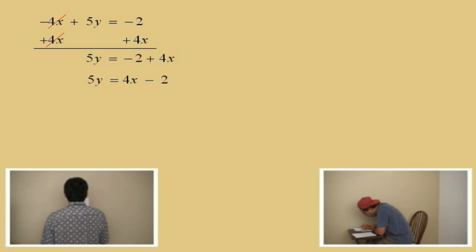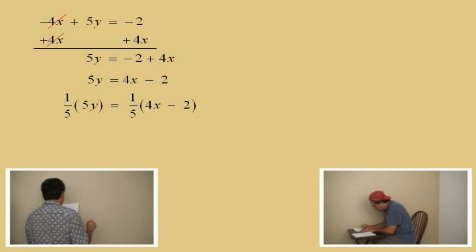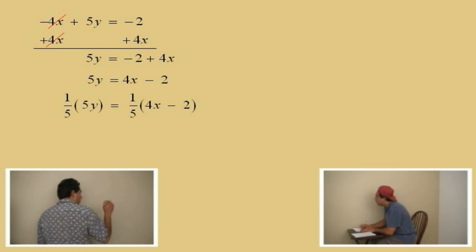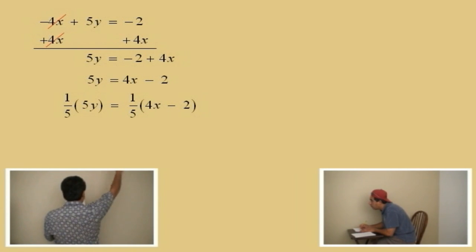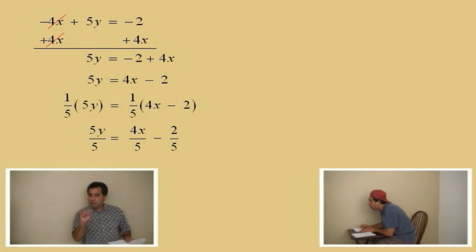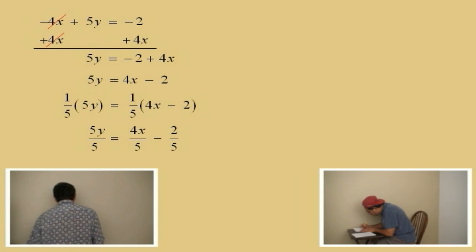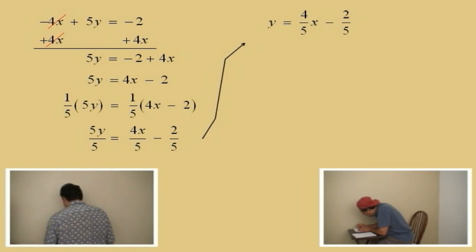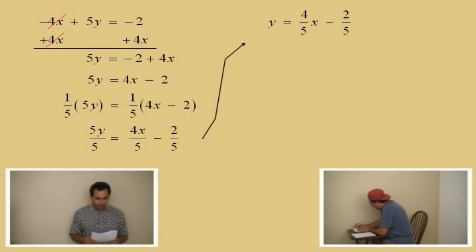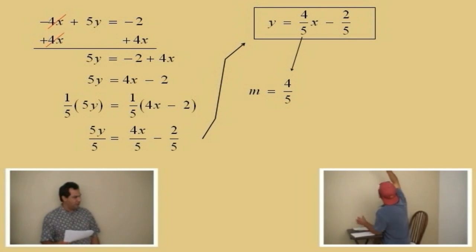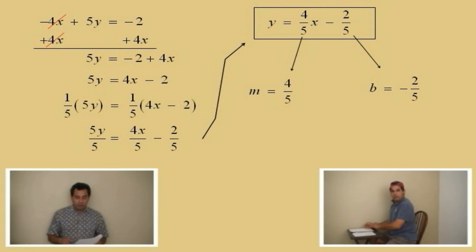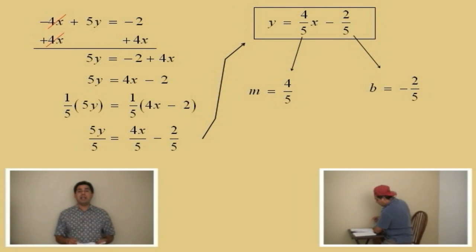Now we've got to solve for y. We're going to divide both sides by 5, which is the same as multiplying both sides by 1 fifth. When we distribute on the right-hand side, a 5 gets placed under each term. So Charlie, what does y equal? 4 fifths x minus 2 fifths. Y equals 4 fifths x minus 2 fifths. What is the slope, Charlie? 4 fifths. And what is the y-intercept? B is negative 2 fifths, and the y-intercept is 0 comma negative 2 over 5. Very nice.